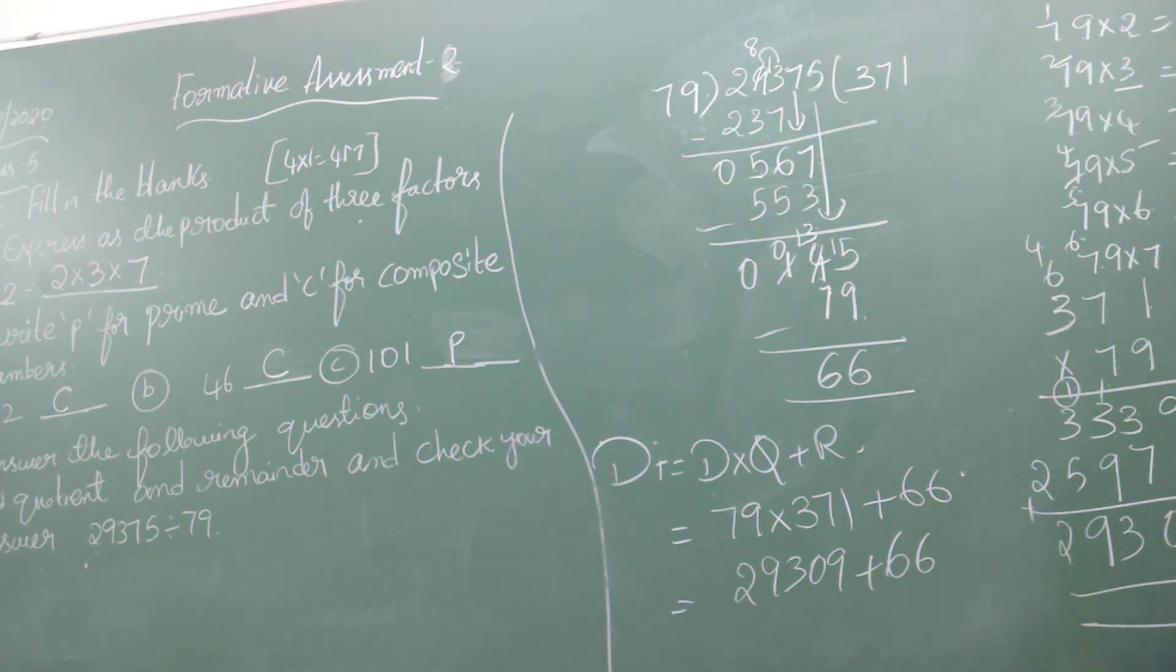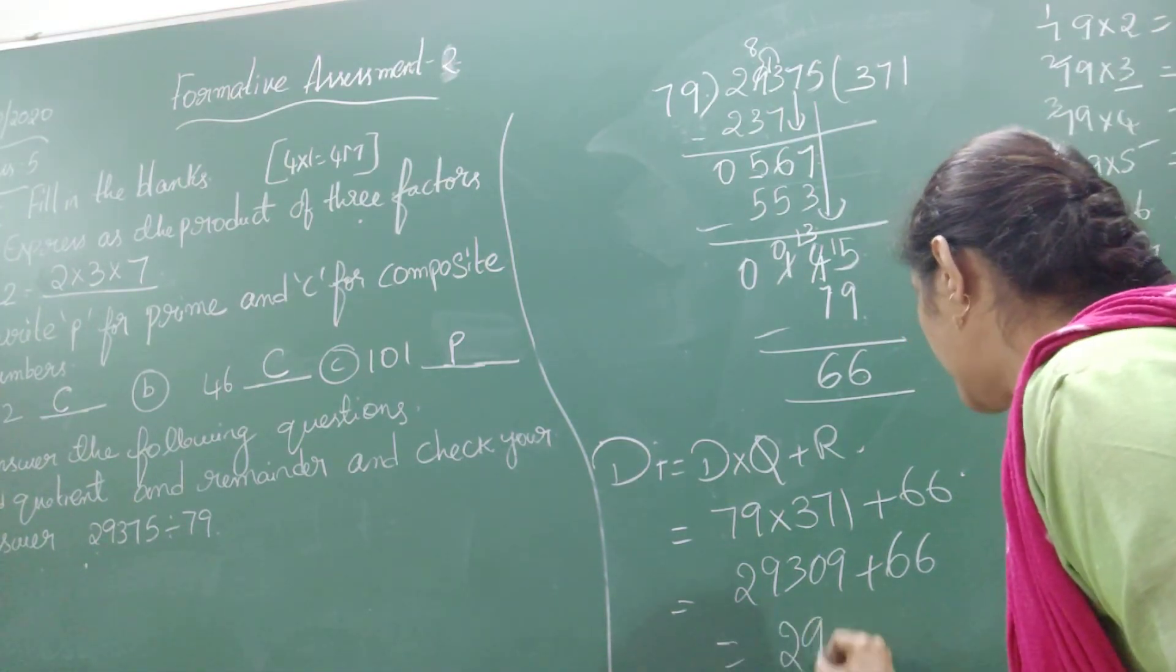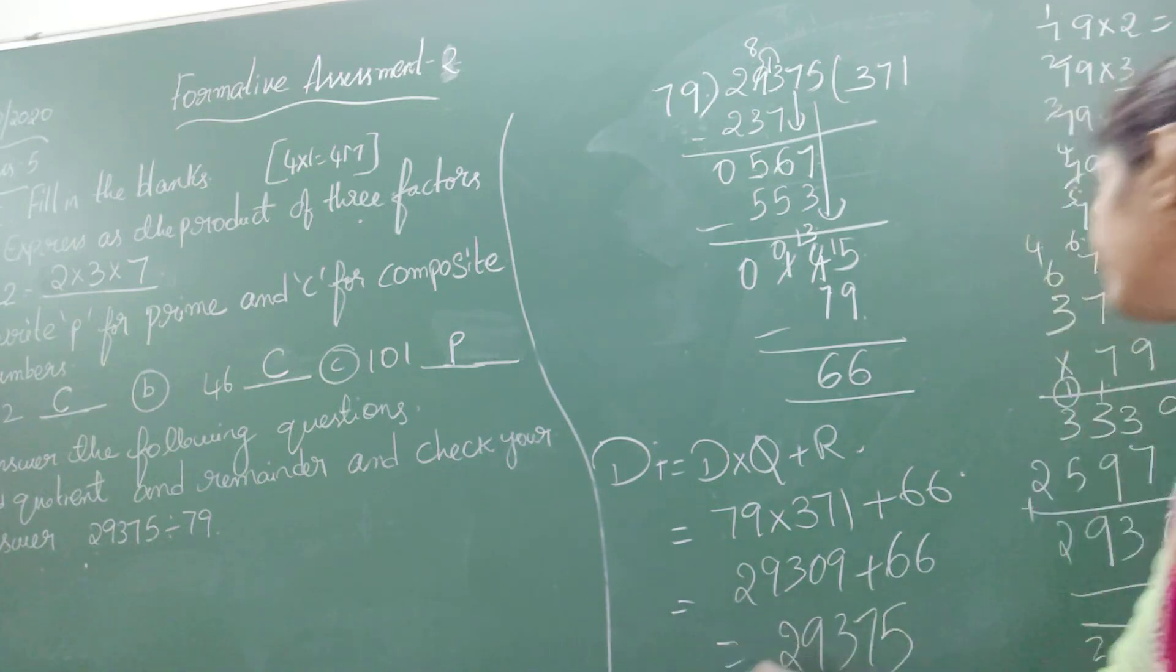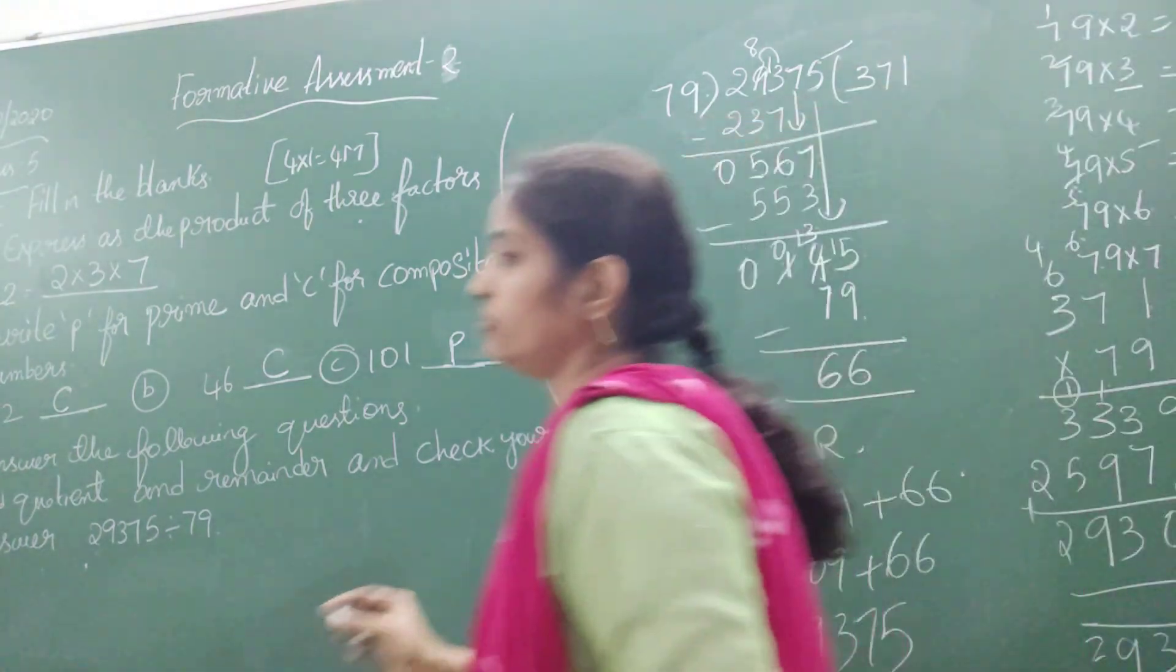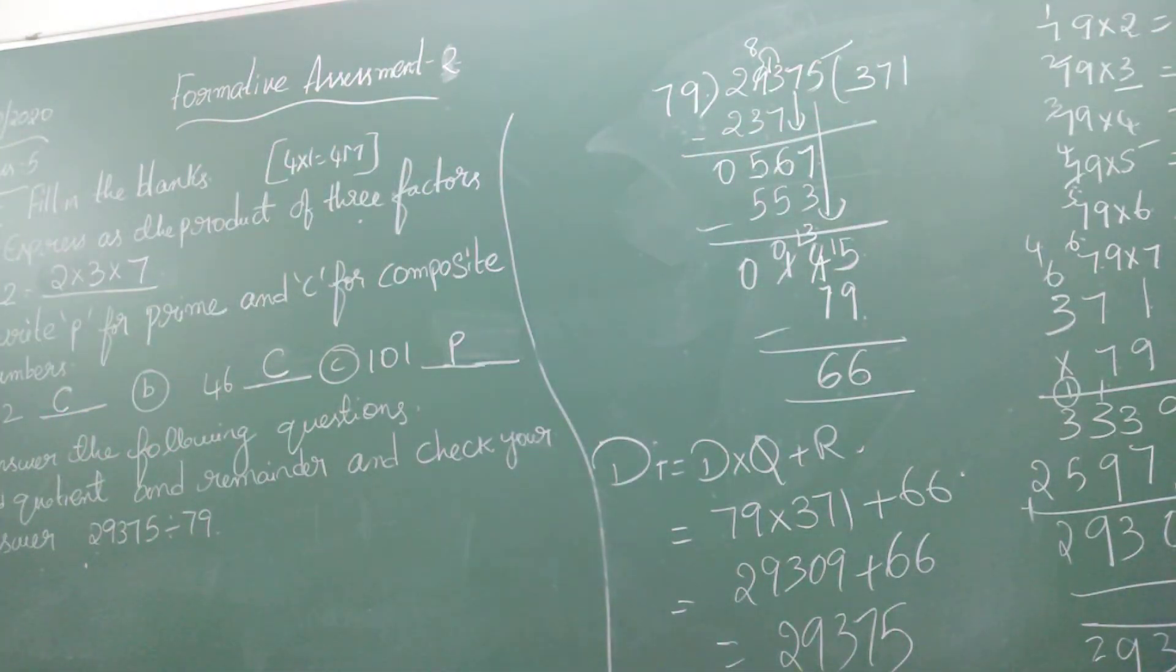9 plus 6 is 15, so 5 and carry 1. 1 plus 0 is 1, 1 plus 6 is 7, then 3, 9, and 2. The value is 29,375. So it shows that what we got is absolutely correct.